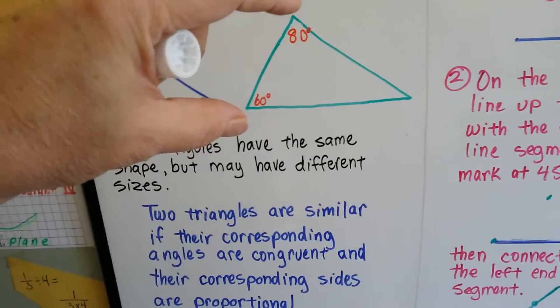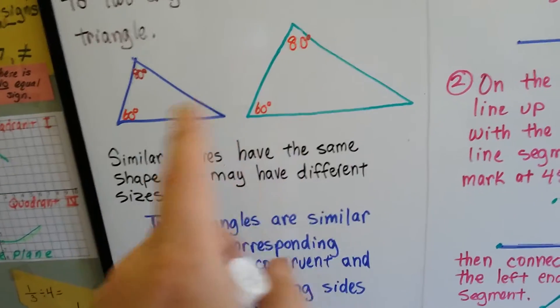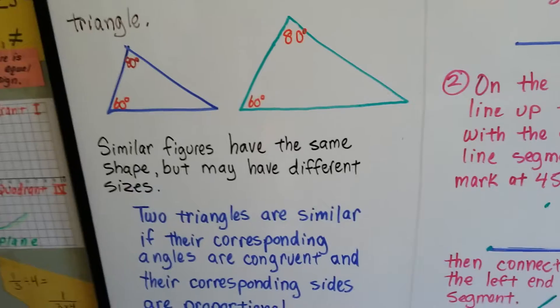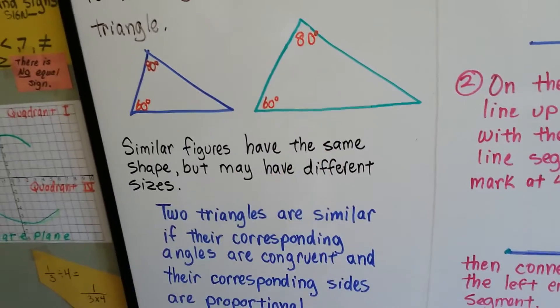So if this was two inches, that would be four inches. And if this was three inches, that would be six inches. It would be double, like that. So we can see that they both have a 60-degree angle and they both have an 80-degree angle, so they're similar.